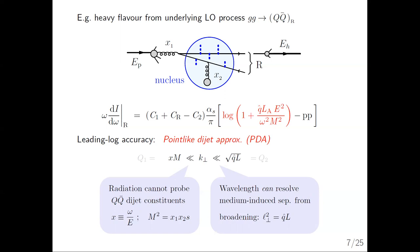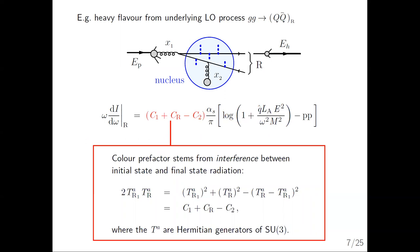The upper limit on the transverse momentum integration tells you that the wavelength can actually resolve all the multiple soft scatterings — that sets the hard scale. You get this ratio of two scales from the physics, which we call the point-like dipole approximation. The pre-factor involves alpha_s and a combination of color Casimir factors. This comes from the interference term between pre-emission and post-emission. You get T^a in representation R1 for parton number one, coupling to the final states. Rewriting using a complete-the-squares trick gives a combination of Casimirs involving the sum of C1 and C2 minus C_R, where C_R is the Casimir of the singlet or octet.